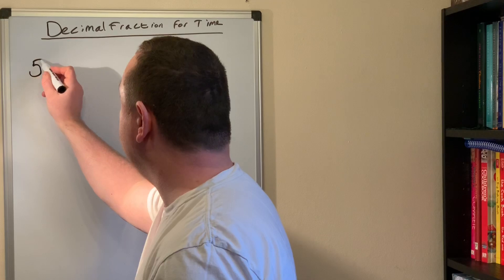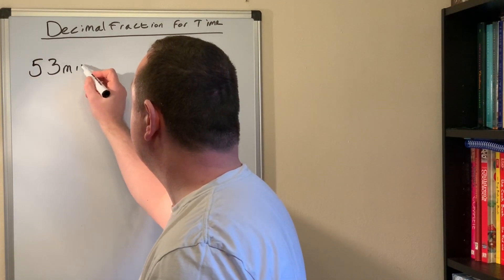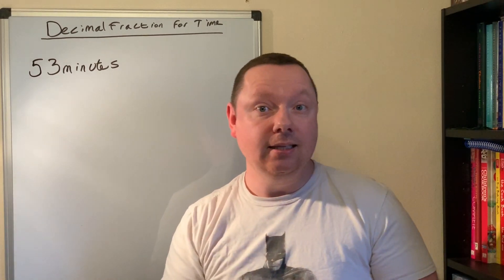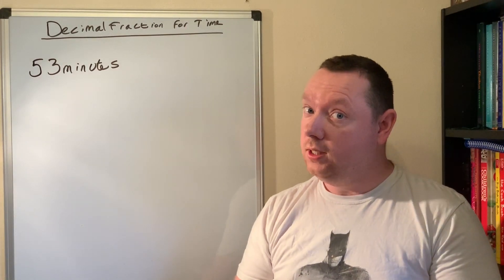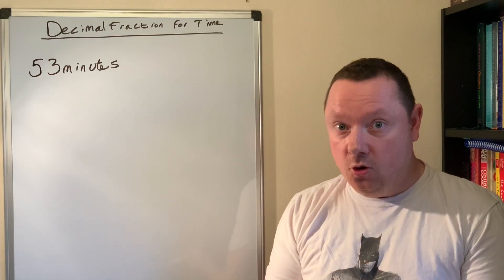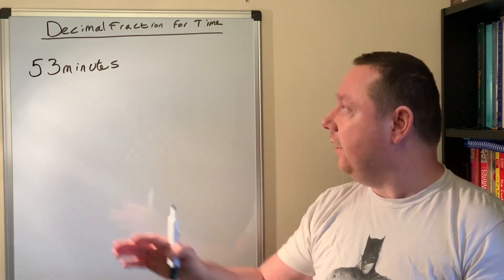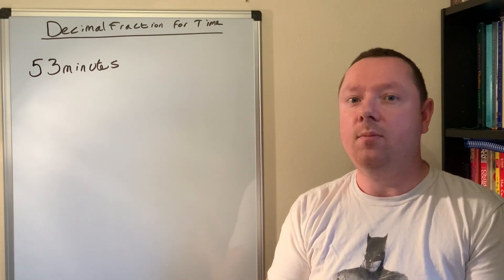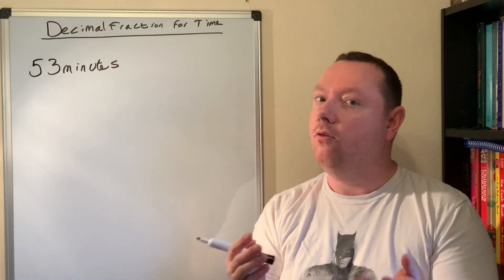If I had 53 minutes, I want to know what that is as a decimal. Now what it is not, it is not 0.53. A lot of people do make that mistake because they think 53, 0.53 like a normal decimal. We need to remember it's out of 60, not out of 100.